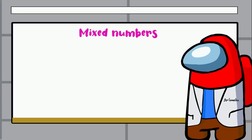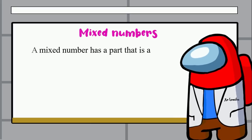A mixed number has a part that is a whole and a part that is a fraction. So as the name says, we are mixing two numbers: a whole part and a fraction.